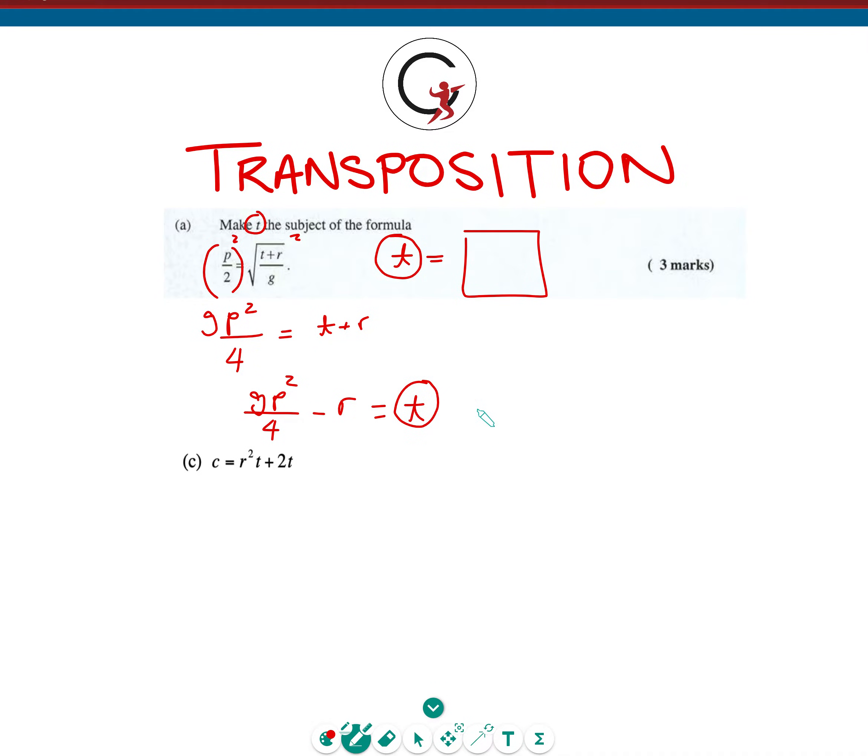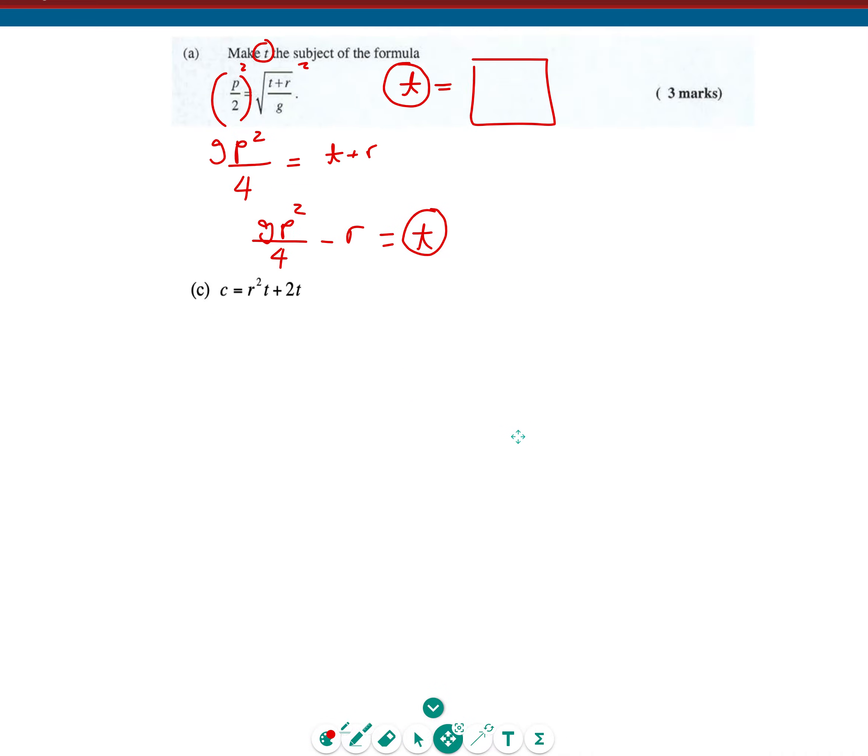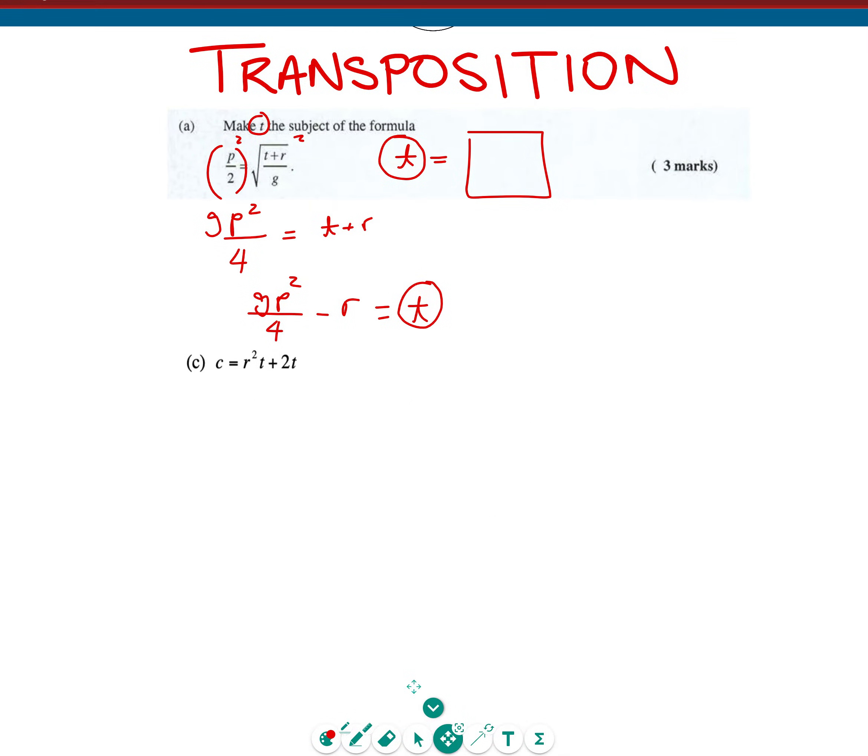Now T is the subject of this formula, and this is the correct answer. Let's move on to this next question, which says C is equal to R squared T plus 2T. And again, we want T to be the subject of the formula.